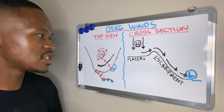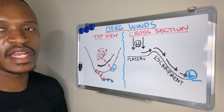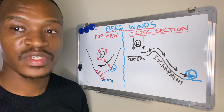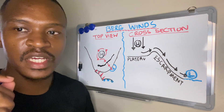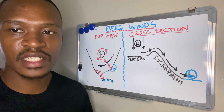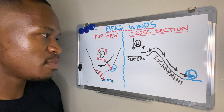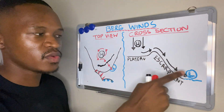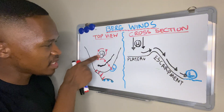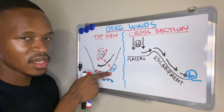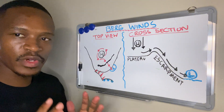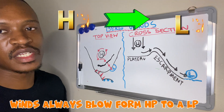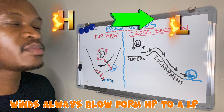This takes you back to Grade 11 pressure gradient force — the force which describes the rate of change and direction of winds as they blow from a high pressure towards a low pressure. Winds will always blow from a high pressure towards a low pressure. Now we get berg winds in winter.